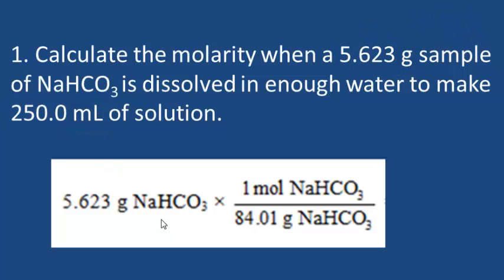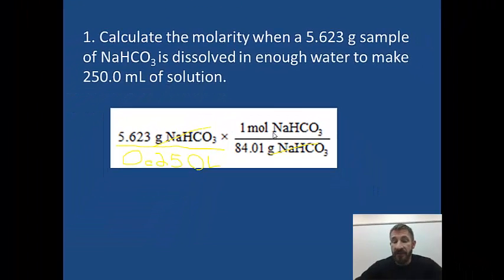First we're going to take our grams and change to moles. We look at the periodic table and get the molar mass of sodium hydrogen carbonate, which is 84.01. The grams cancel out, and now we have moles. Now we divide by the liters—you could put the liters right here under the mass and divide it by 0.250 liters. Your answer would be 5.623 divided by 0.25 divided by 84.01, and that gives you the right answer.